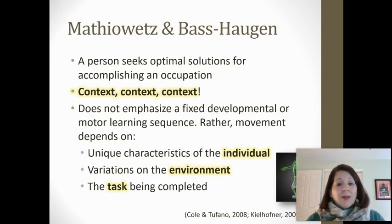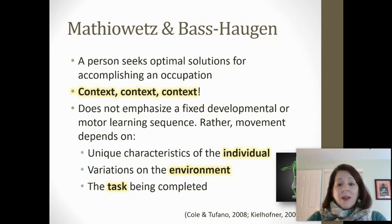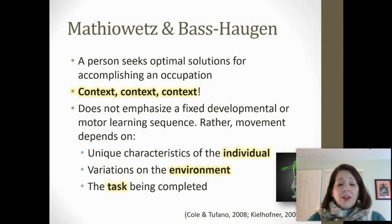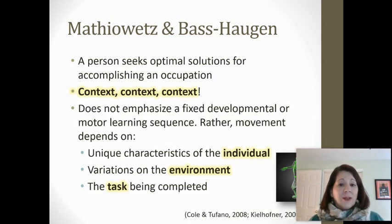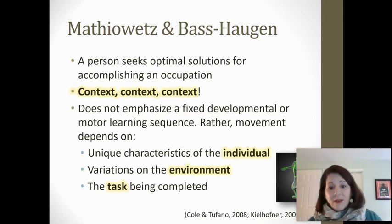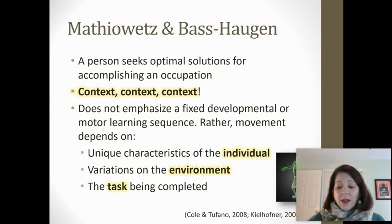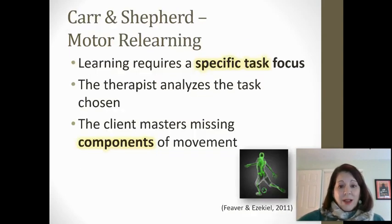As people seek optimal solutions for accomplishing a task, it's all about the context. The context forces us to behave in different ways. It's not about cephalocaudal proximodistal development — it's about how people move within the tasks they want to do. It's all about the unique characteristics of the individual, the variations in the environment, and the task being completed. This is why occupational therapists bring a great deal to motor control and motor relearning — we understand the influences of the person, the occupation they desire, and the variety of environments they may be in.